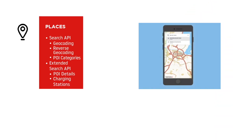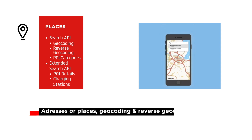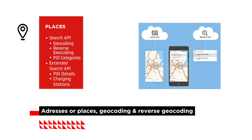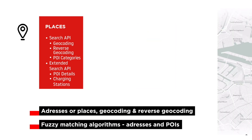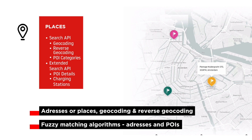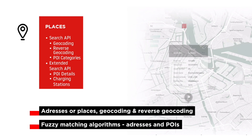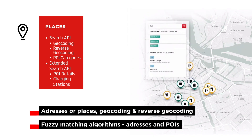The Places family enables geocoding and reverse geocoding locations. Search for an address or a place, all with text auto-completion, along a route or in an area. You can also get photos, reviews, and ratings of many points of interest.